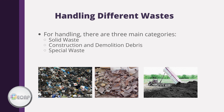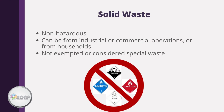Here you can see examples for each type of waste category. The picture on the left is municipal waste, while the center is cinder blocks, which is a type of construction and demolition debris. The picture on the right shows wastewater sludge, which is a special waste. Solid waste is waste that is non-hazardous, comes from industrial or commercial operations or households, and is not exempted or considered special waste.